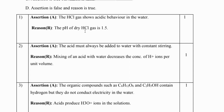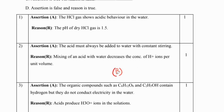Moving to the next one: the acid must always be added to water with constant stirring; mixing of an acid with water decreases the concentration of H⁺ ions per unit volume. Both statements are true, but there is no relation between them, so the answer is B.